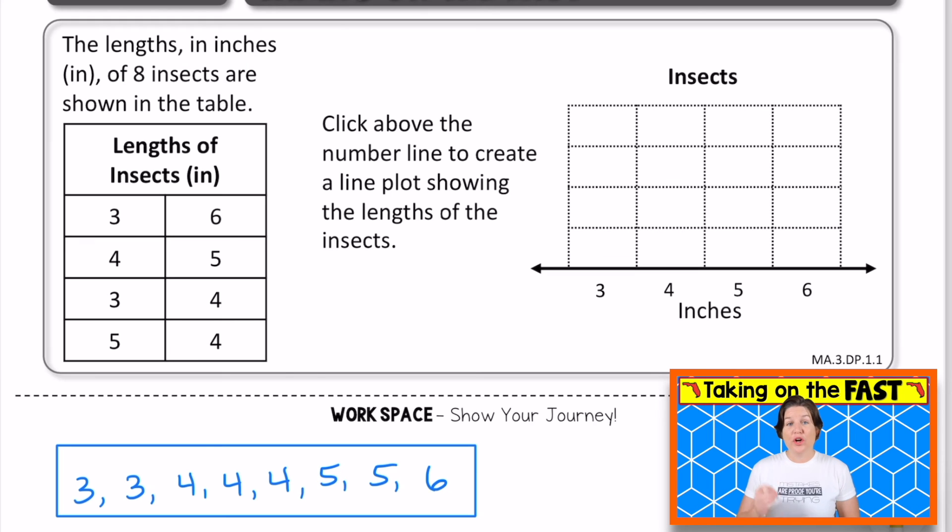And finally, we have our graphic response item display. This is where we have graphics, we might need to click, we might need to drag. Things can get really interesting with a graphic response item display question. So just be ready for anything. This one says that the lengths in inches of eight insects are shown in the table below.